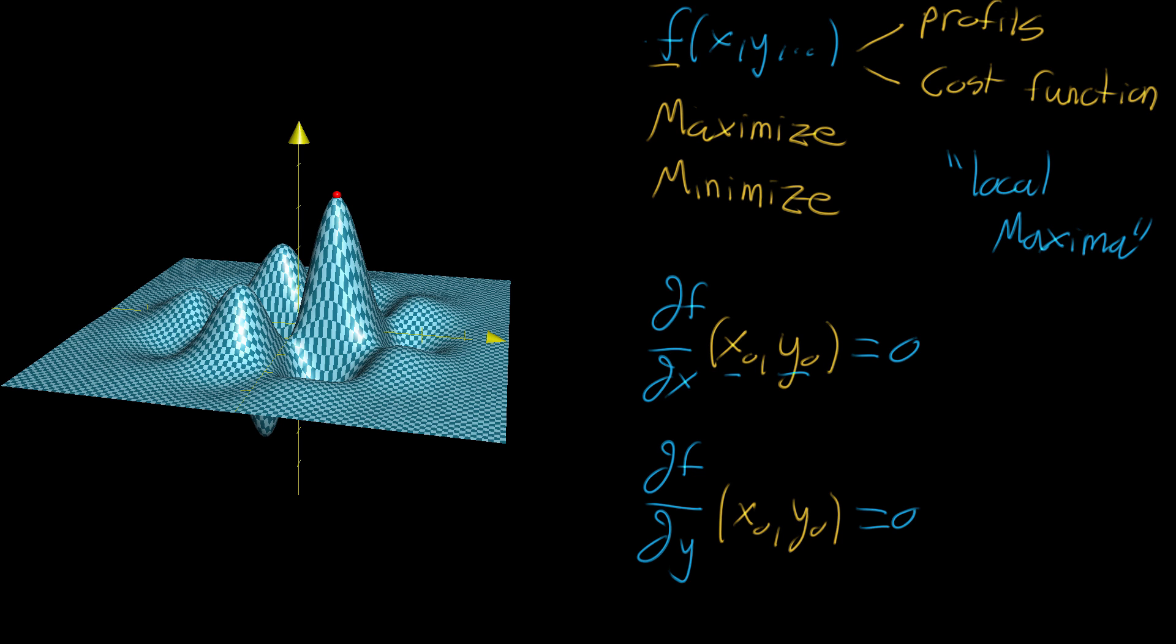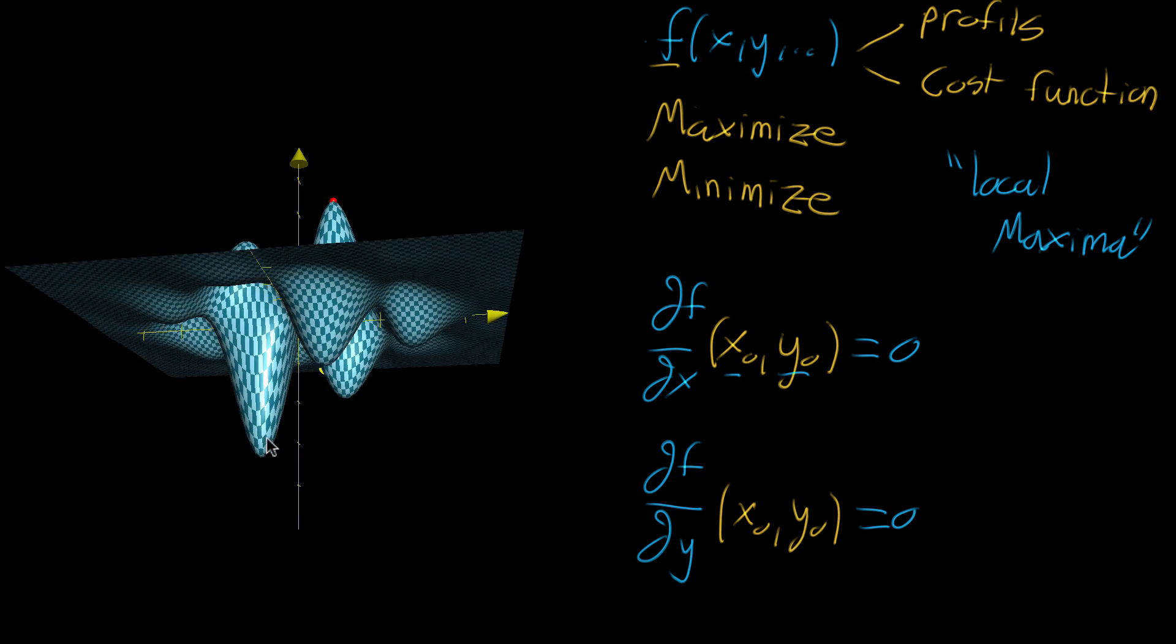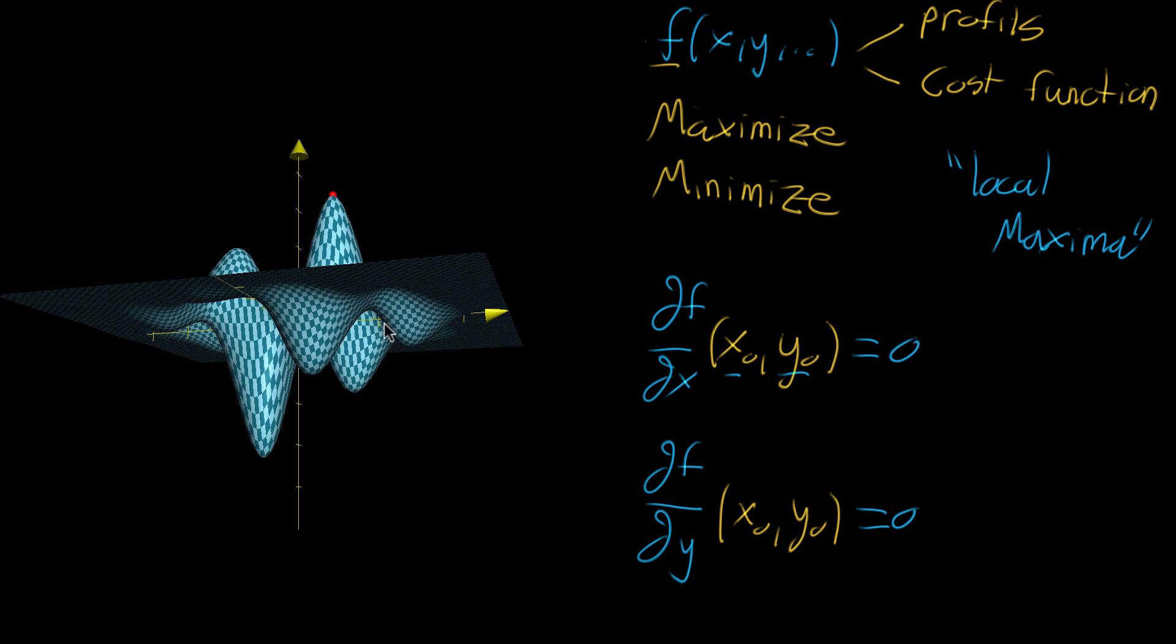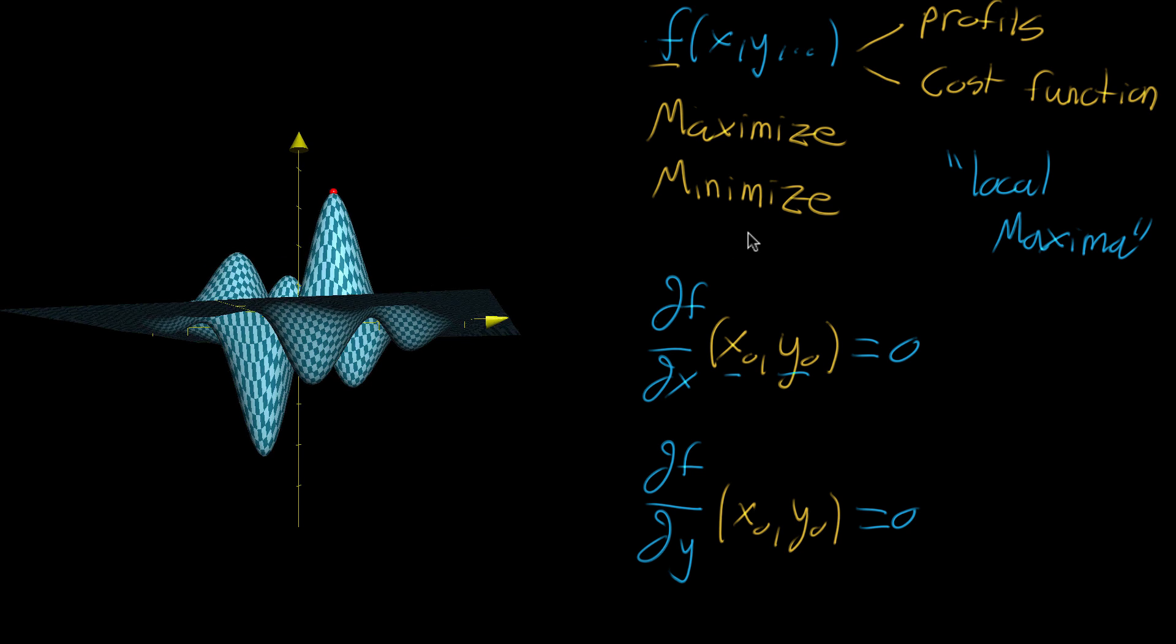But there's also another circumstance where you might find a flat tangent plane. And that's at the minima points. If you have the global minimum, the absolute smallest, or also just the local minima, these inverted peaks, you'll also find flat tangent planes. So what that means, first of all, is that when you're minimizing a function, you also have to look for this requirement where all the partial derivatives are zero. But it mainly just means that your job isn't done once you've done this. You have to do more tests to check whether or not what you found is a local maximum, or a local minimum, or a global maximum.